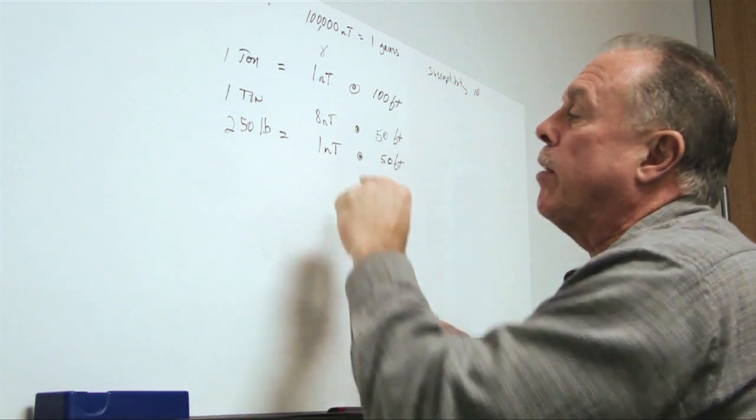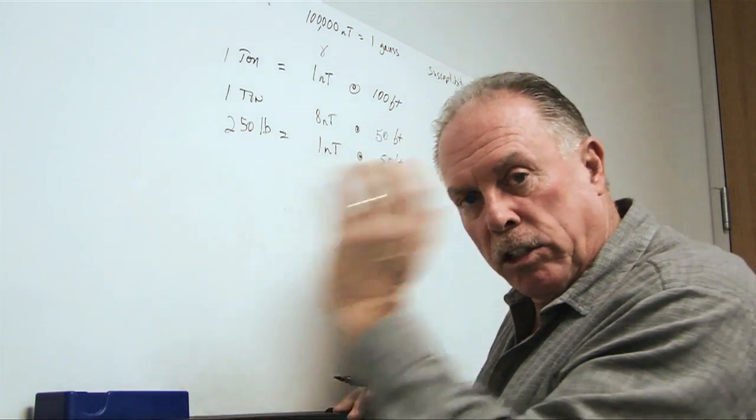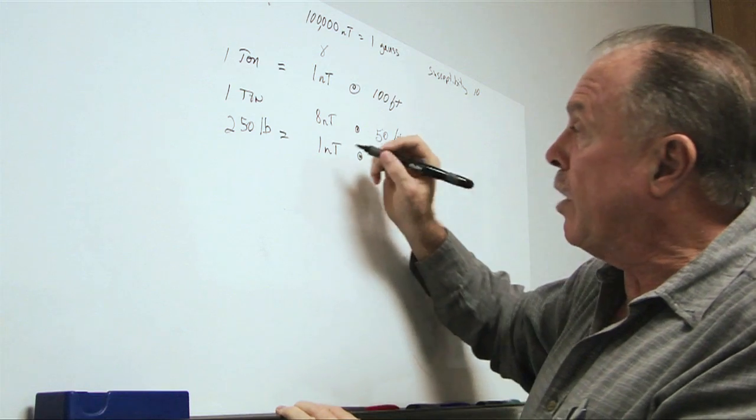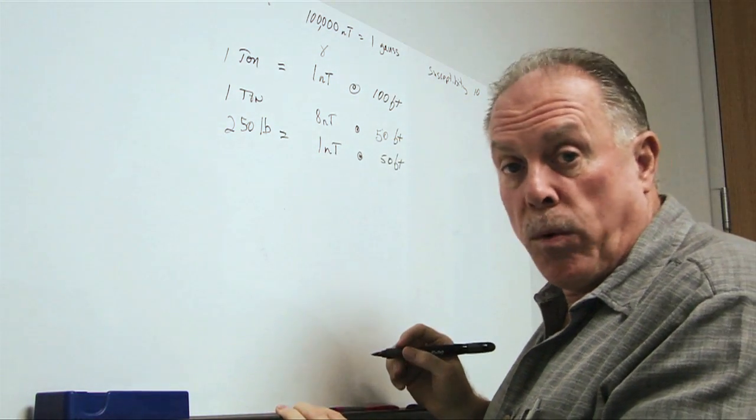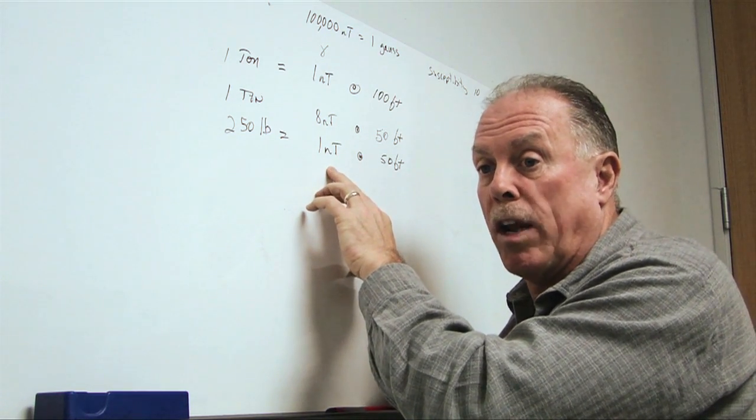Remember that the cesium vapor sensor, whether it's deployed in a single system or as a transverse gradiometer, is measuring data less than 0.1 nanotesla. So, we are able to see the one nanotesla distortion quite easily.